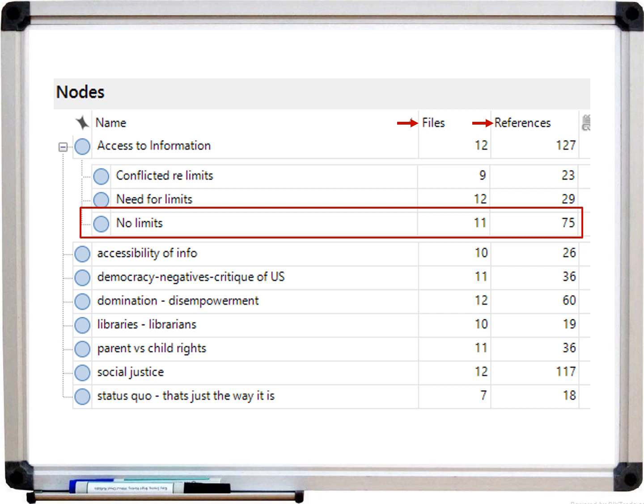For example, for the node of no limits to access to information, I coded 11 of my total 12 data sources at least once at that code, and I coded 75 individual segments of text within those 11 sources at that code.